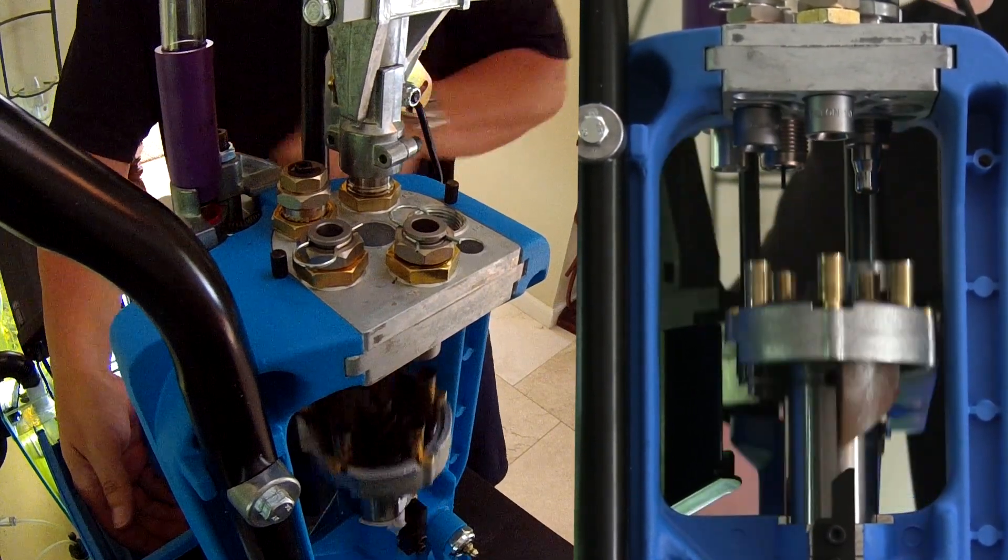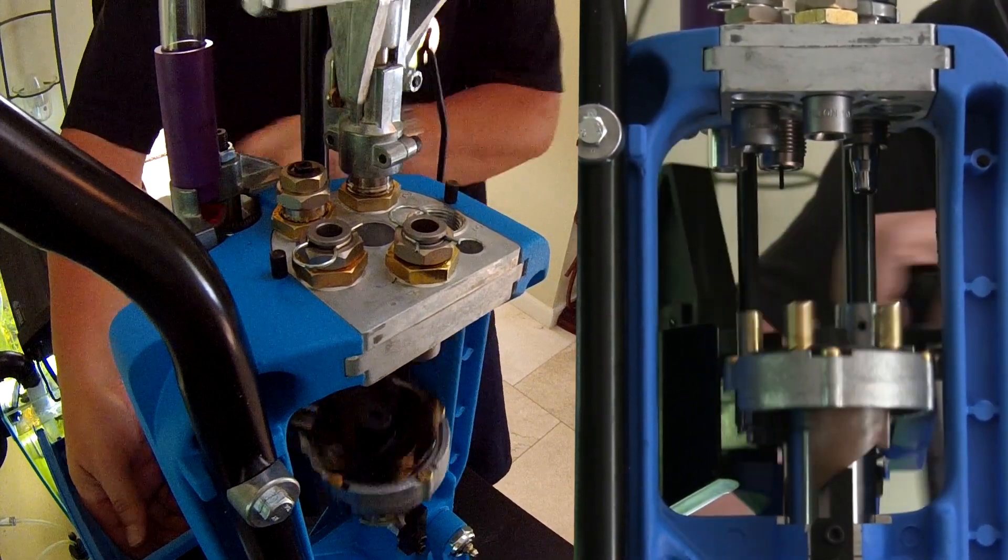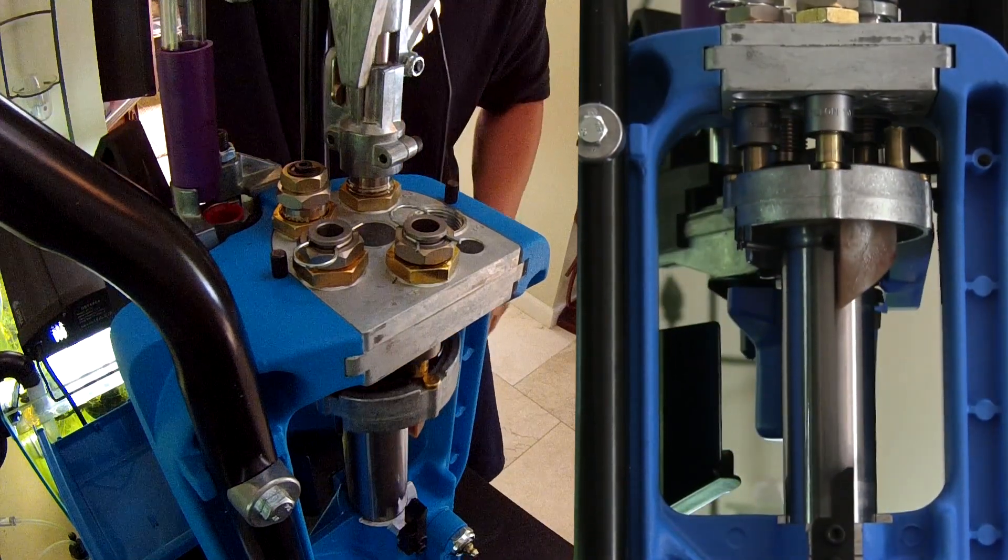The reason for .40 caliber brass was because it was straight wall that did not necessitate the use for lube during this process.